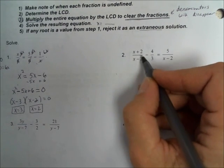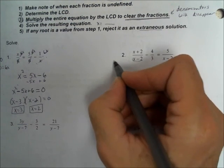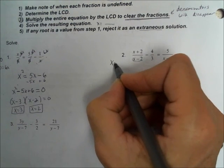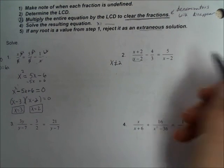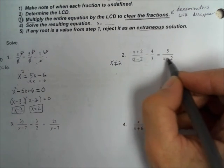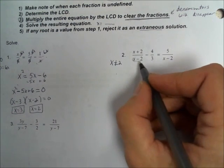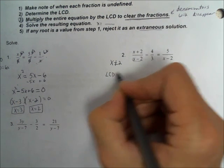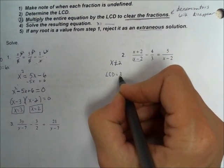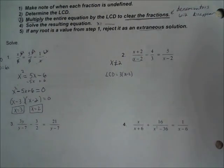In question number 2, what will make these denominators equal to 0? What will make x minus 2 equal to 0? If we let x equal 2, then 2 minus 2 would equal 0. So we can say x can't be equal to 2, and that's it, because nothing else will make any of these denominators equal to 0. Step 2: the LCD — we have an x minus 2 and a 3, so the LCD is 3 times x minus 2.